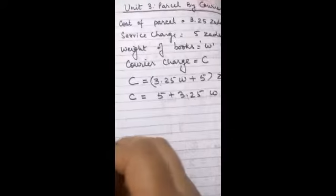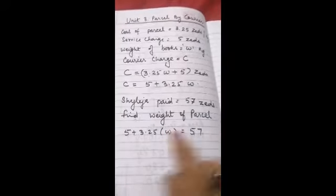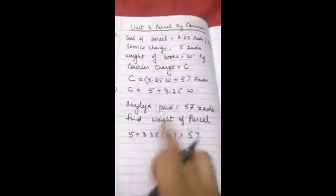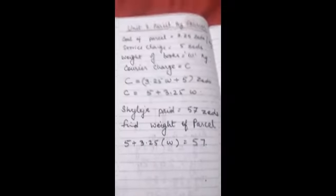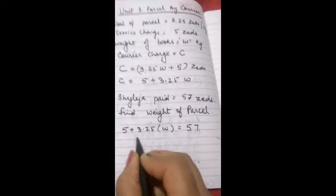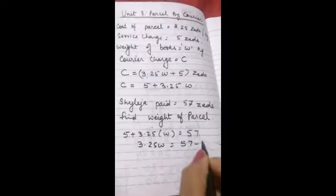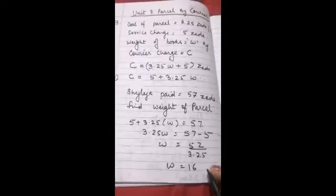Now we come to question number 14. Question 14 says that Sheldra has paid 57 Zs so find the weight of her parcel. So let the weight be W, then according to this above relation it will be 5 plus 3.25W is equal to 57 Zs. So we will solve it, 3.25W is equal to 57 minus 5. So by calculation W will be equal to 16 kg.